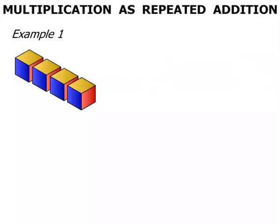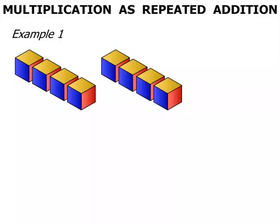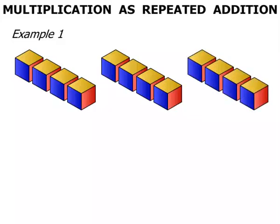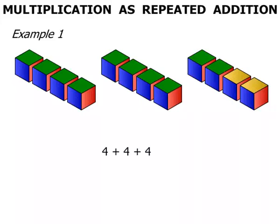We've got 4 blocks there, another 4 blocks, and then 4 more blocks. So as an addition, 4 plus 4 plus 4. Now what does that equal? Counting up: 1, 2, 3, 4, 5, 6, 7, 8, 9, 10, 11, 12. It equals 12.